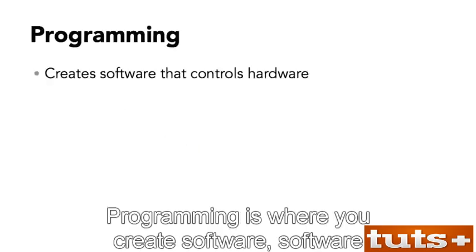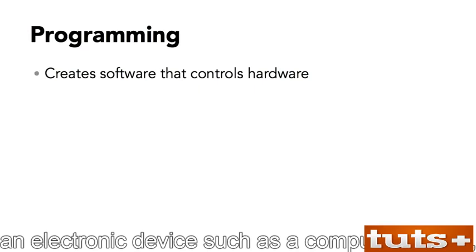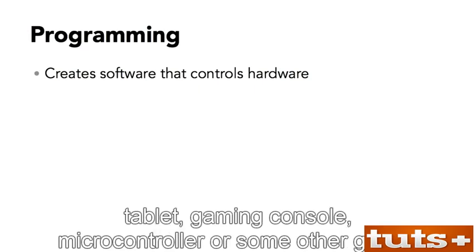Programming is where you create software. Software controls hardware, which is the physical part of an electronic device, such as a computer, phone, tablet, gaming console, microcontroller, or some other gizmo.